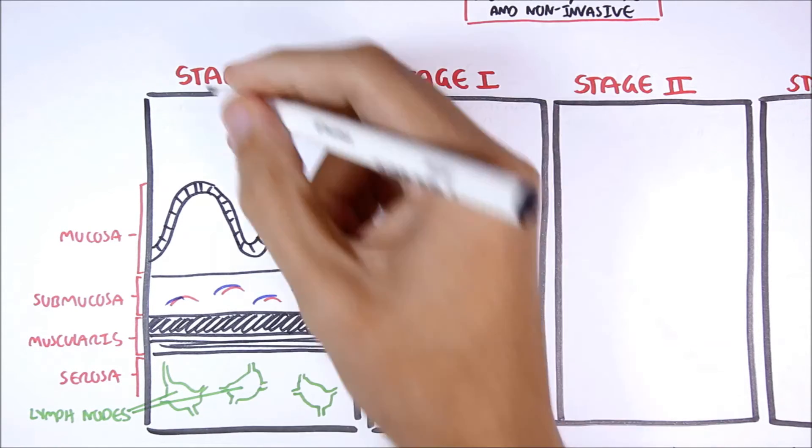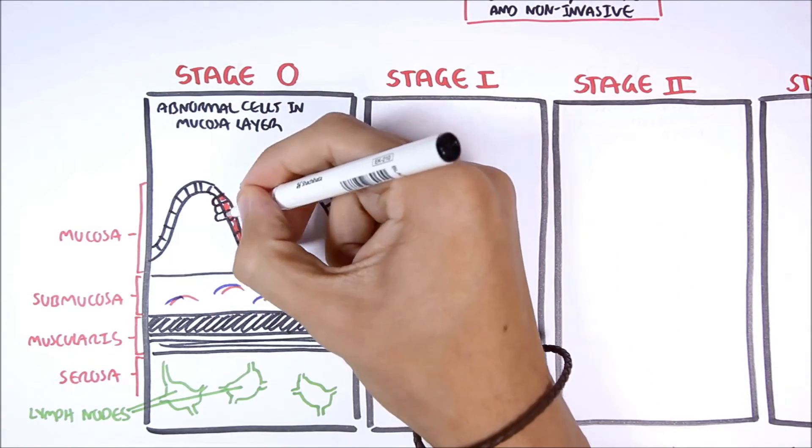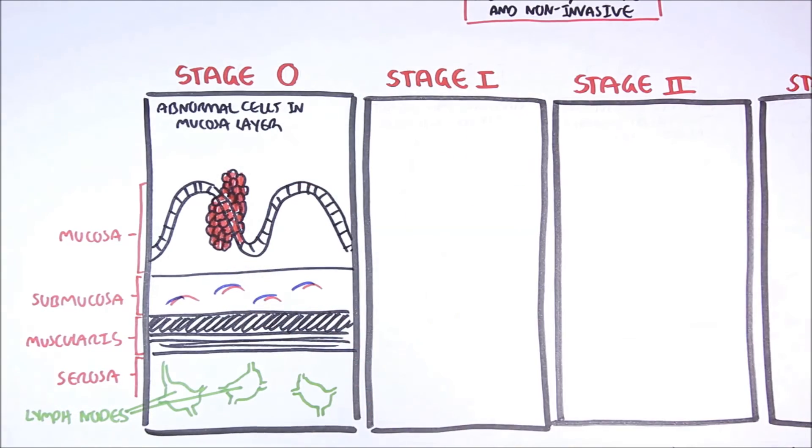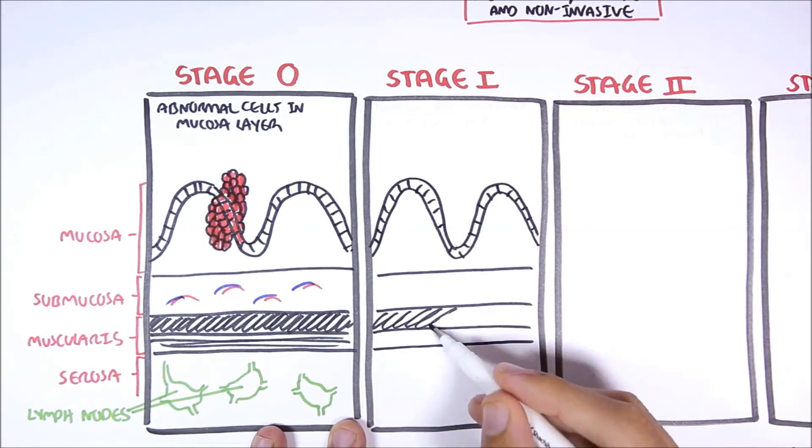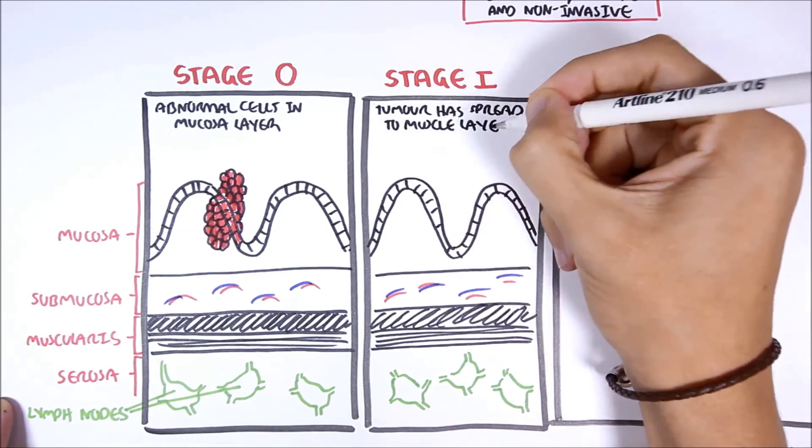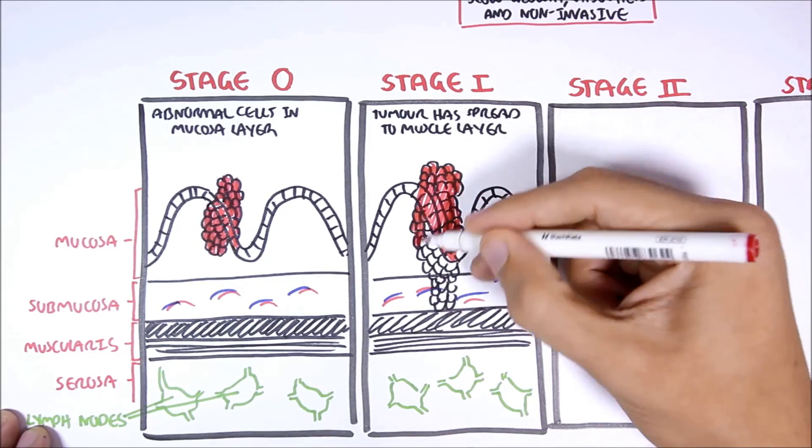Stage 0 is basically when we have abnormal cells in the mucosa layer that will keep dividing, forming a polyp. The polyp is usually benign. Stage 1 is where the tumor has spread to the muscle layer, and things may be getting serious.